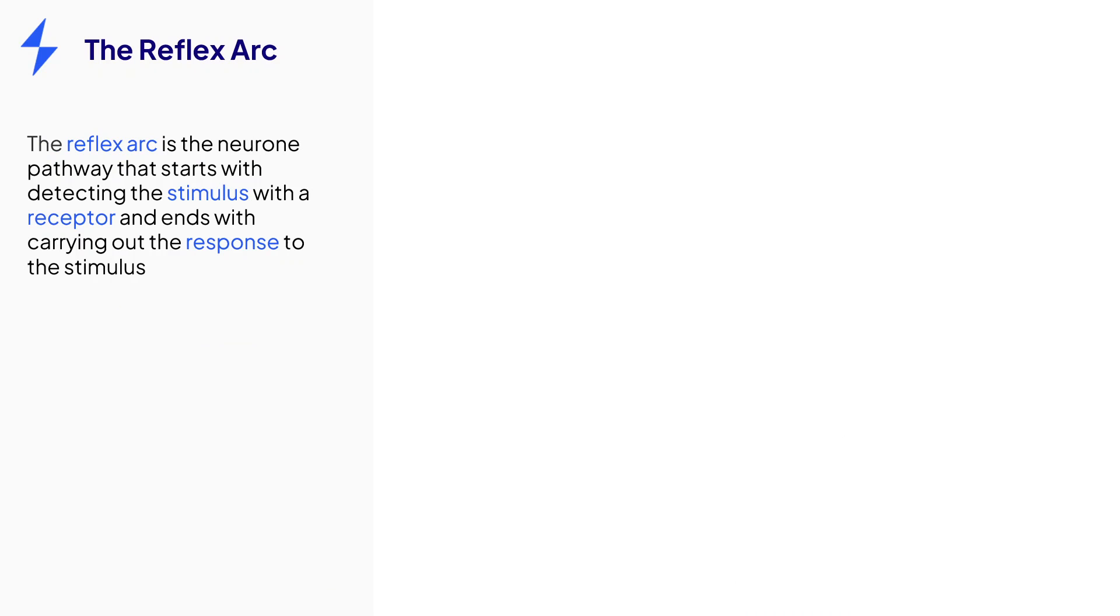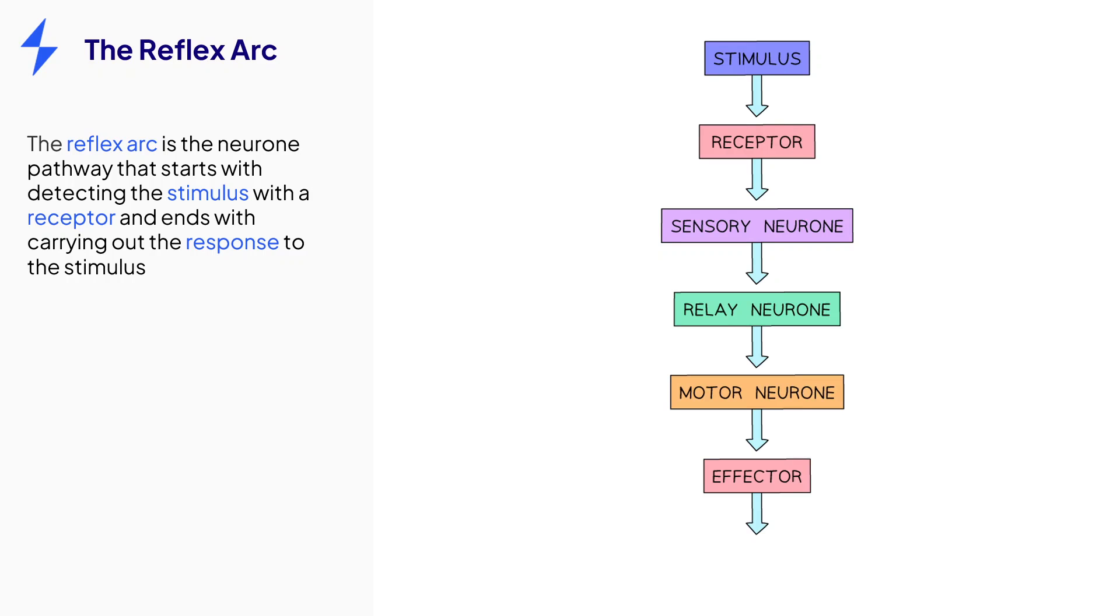The term reflex arc refers to the sequence of neurons that the impulse passes along in order to trigger the reflex response. This is always the same sequence and is shown here in the diagram.